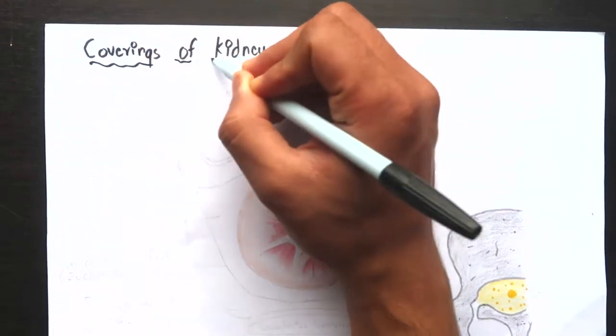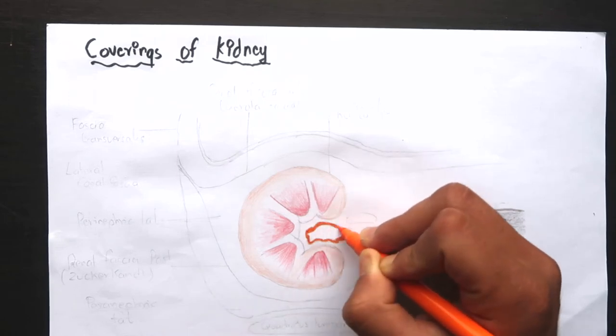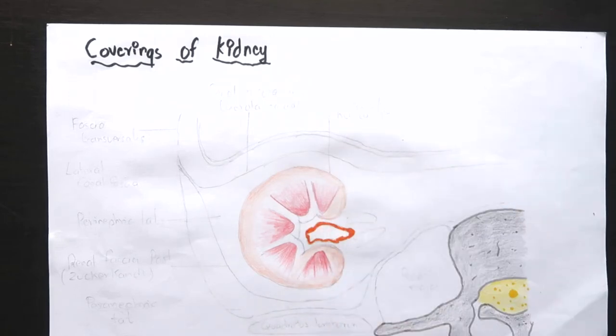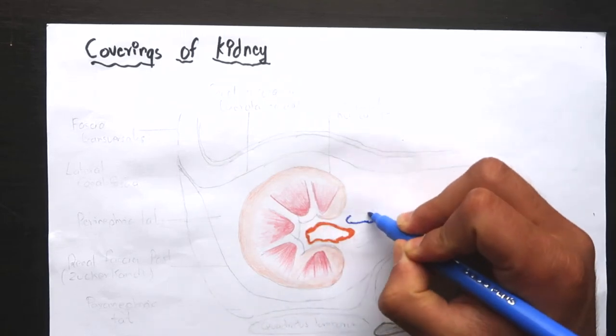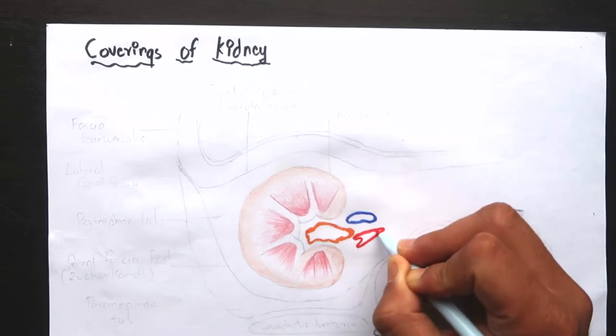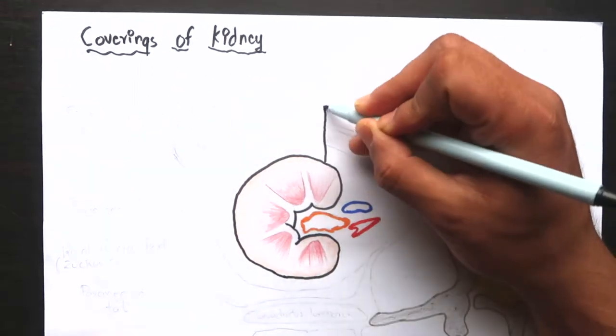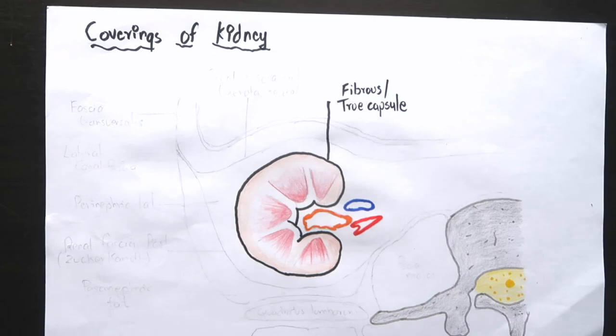Now let's go to the coverings of the kidneys. There are four structures or the tissues that cover the kidney. I'll explain them from the transverse section of the kidney. The innermost layer is the fibrous capsule or true capsule. It is thin membrane that closely invests the kidney and lines the renal sinus as well.